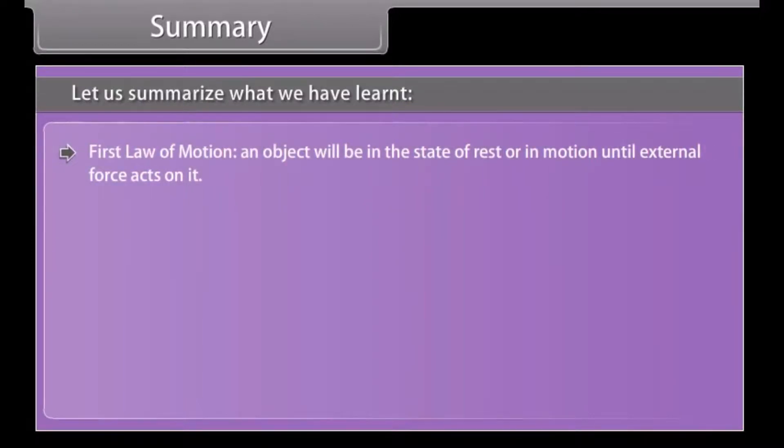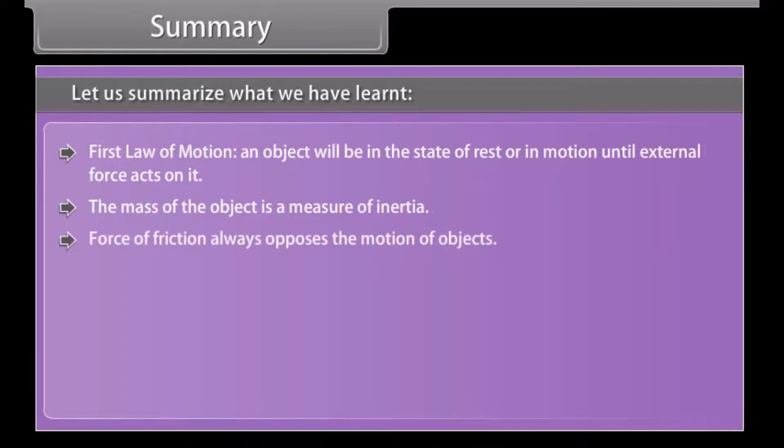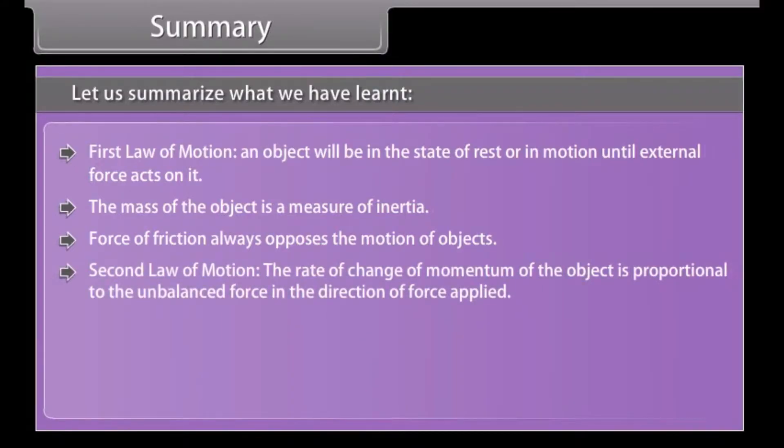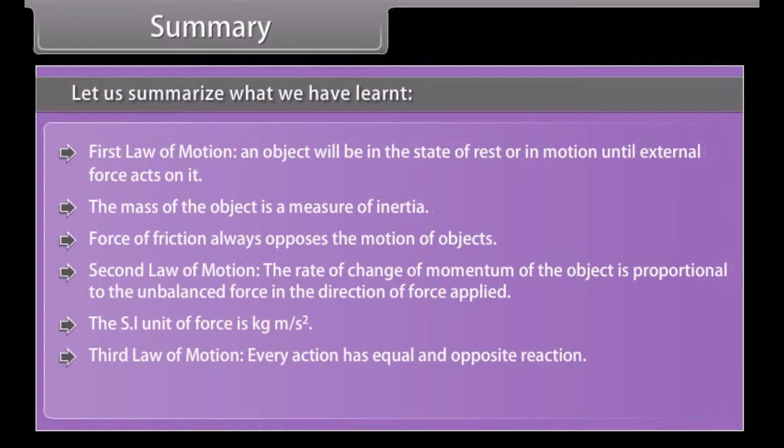First law of motion: an object will be in the state of rest or in motion until external force acts on it. The mass of the object is a measure of inertia. Force of friction always opposes the motion of objects. Second law of motion: the rate of change of momentum of the object is proportional to the unbalanced force in the direction of force applied. The SI unit of force is kilogram meter per second square. Third law of motion: every action has equal and opposite reaction. The total momentum is always conserved.